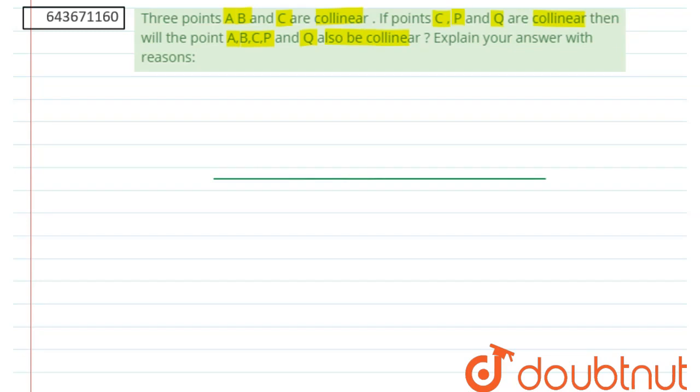So suppose we have a line with point A, point B, and point C. From this point C, we can pass infinite number of lines. One line may be in this direction, one line may be in this direction, and one line may be also extension of this line or the same line.